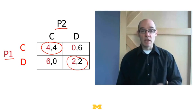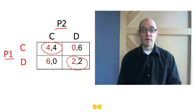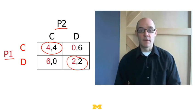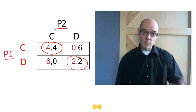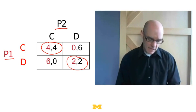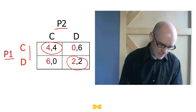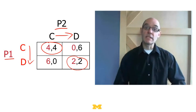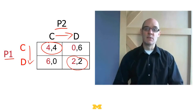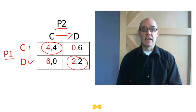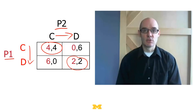So collectively, they're better off if they cooperate, and they're worse off if they defect. But as we analyze this game, we'll see that there's always going to be incentives for both players to defect. Collectively they're better off if they cooperate; individually they're better off if they defect, and that creates a tension.